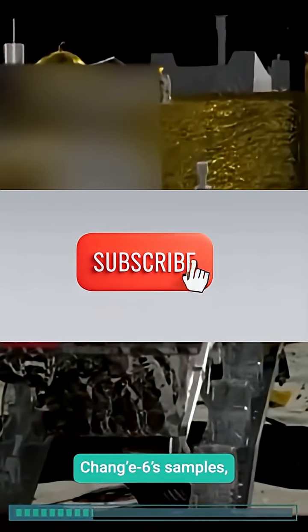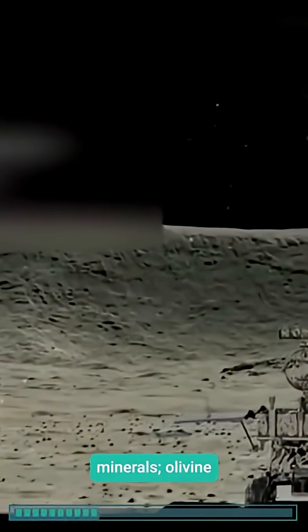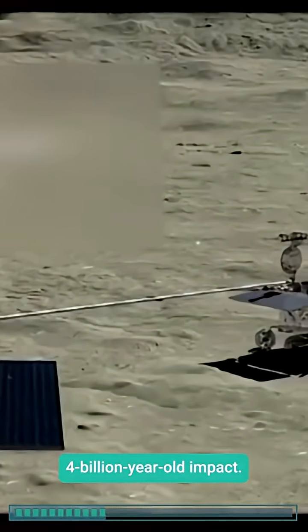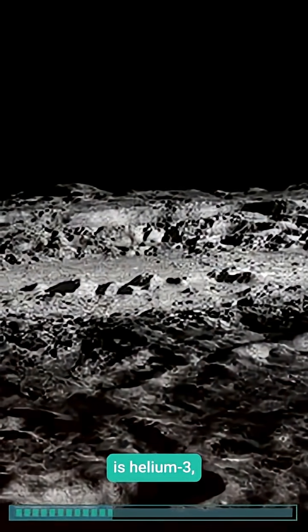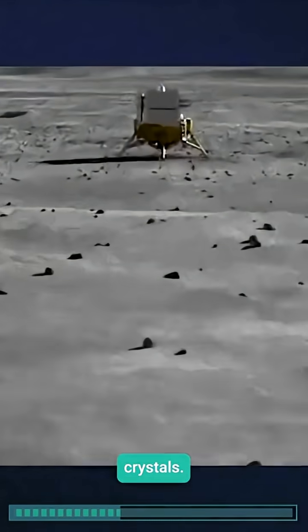Chang'e 6's samples, analyzed in 2025, confirmed mantle minerals—olivine and pyroxene—exposed by a 4 billion-year-old impact. But the bombshell is helium-3, a fusion fuel worth trillions, embedded in Chang'e site Y crystals.